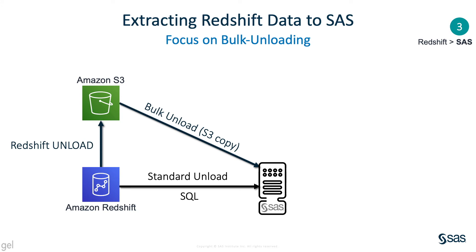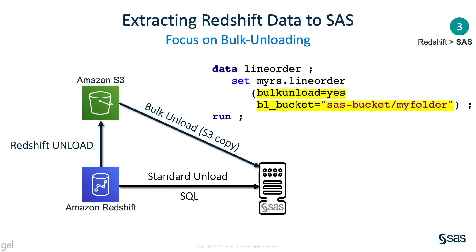Scenario number three: extracting Redshift data to SAS. Again, multiple possibilities exist. The best approach is to use bulk unload to stage the Redshift data in S3 using the Redshift UNLOAD statement, before moving the resulting flat files into SAS. Simply add the BULKUNLOAD and BL_BUCKET options to your extraction process.